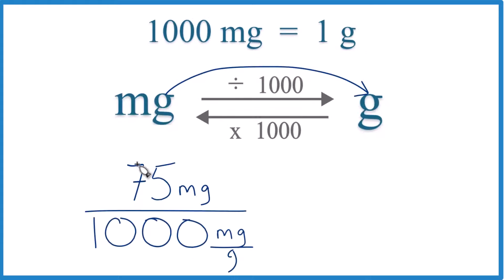Like this. So we're just dividing 75 by 1,000. But because we have milligrams on the top, and then down here, 1,000 milligrams per gram, just like we have in our conversion factor, the milligrams cancel out because they're on the top and the bottom.